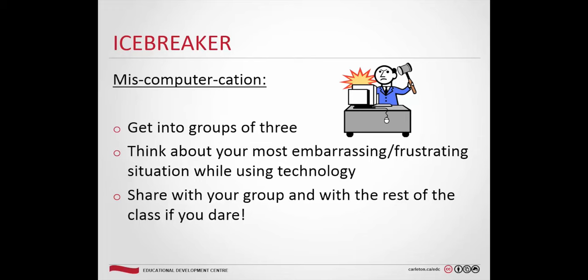It doesn't have to be groups of three — maybe just with your table partners, whoever's there with you. Think about some embarrassing or frustrating experience you've had with technology and assessment. For example, in my own experience as a student, I actually submitted the completely wrong assignment — grabbed the wrong file entirely. Thankfully my instructor said, you're supposed to hand in assignment three, not two. So take a couple of minutes and talk with the people at your table about experiences where technology didn't work for you, either as a student or an instructor.